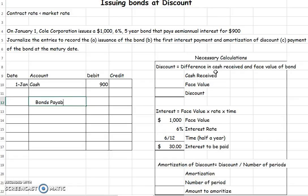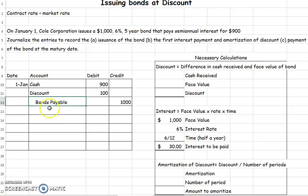The amount that we're going to repay is always the face value, so what you'll credit to Bonds Payable will always be the face value. The difference is going to be either a discount or a premium. In this situation, since we need an extra debit to balance, we know this is a discount. You can remember that D and D — discount has a normal debit balance. You also know it's a discount because you got less than what you have to repay.